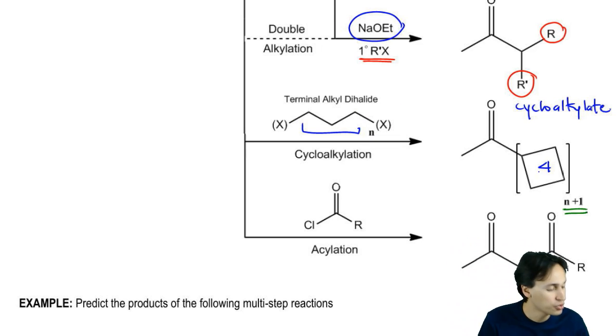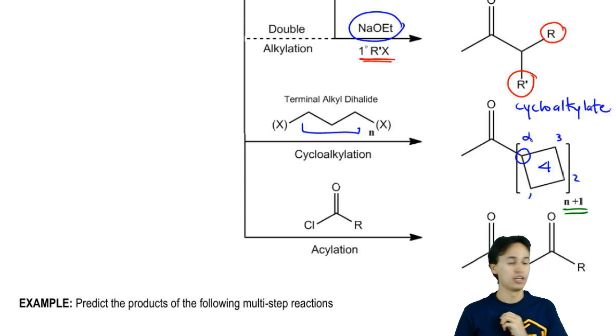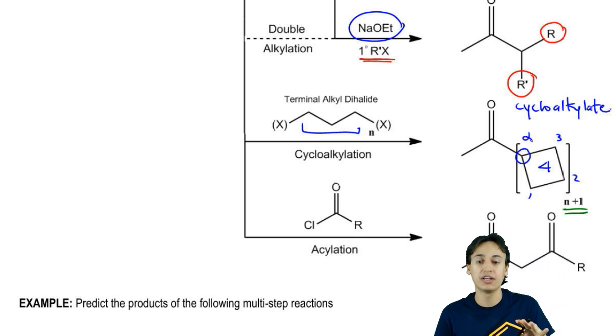Why? Because these are the three carbons, one, two, three, and this is the alpha carbon that you started with. It's a four-membered ring, but only three of those new carbons came from the dihalide.